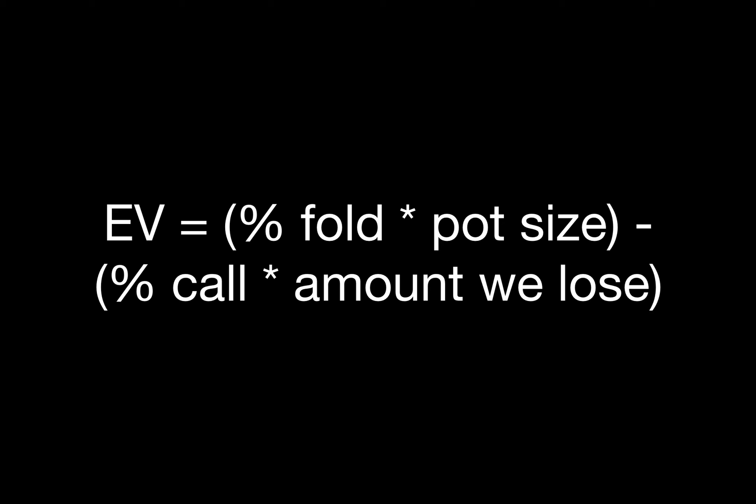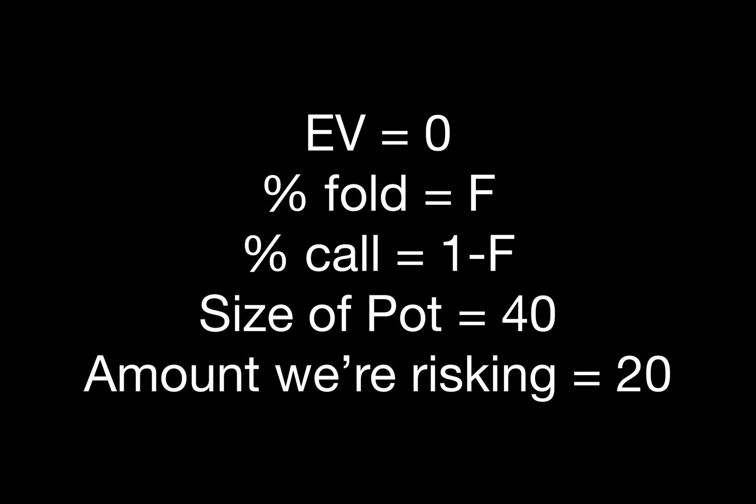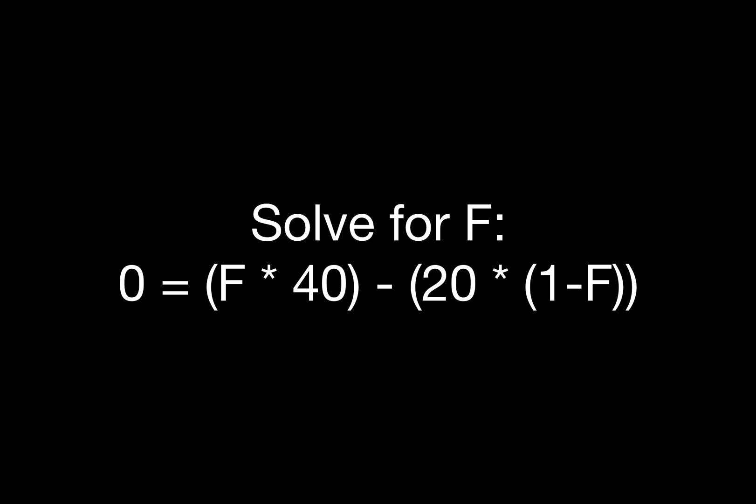In order for us to calculate this we use the following formula. Expected value equals the percentage chance that our opponent folds multiplied by the pot size, minus the percentage chance that our opponent calls times the amount that we risk. In this case we know that we want to solve for how often our opponent folds. As you can see, what we're trying to solve for is an expected value of 0. We're plugging in the variables fold and call as f and 1 minus f. The size of the pot is 40 and the amount that we're risking is 20. Plugging in all of these variables we get the following formula.